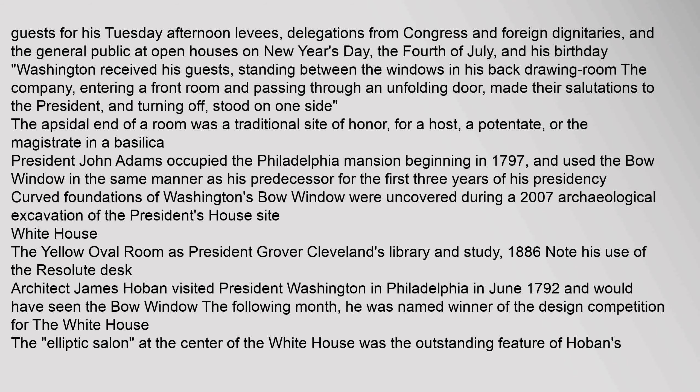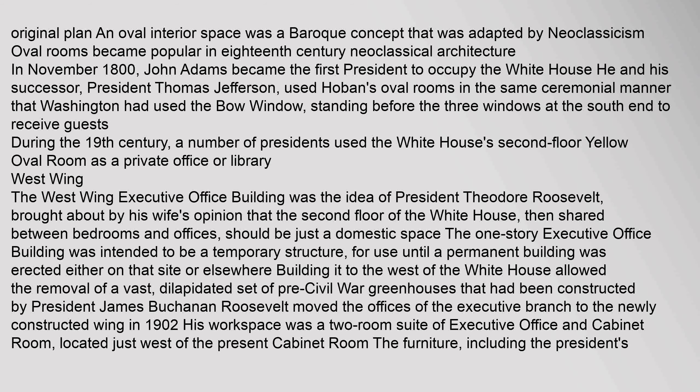Curved foundations of Washington's bow window were uncovered during a 2007 archaeological excavation of the President's House site. Architect James Hoban visited President Washington in Philadelphia in June 1792 and would have seen the bow window. The following month he was named winner of the design competition for the White House. The 'Elliptic Salon' at the center of the White House was the outstanding feature of Hoban's original plan. An oval interior space was a Baroque concept adapted by neoclassicism. In November 1800, John Adams became the first president to occupy the White House.